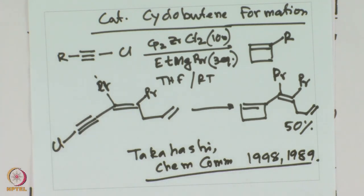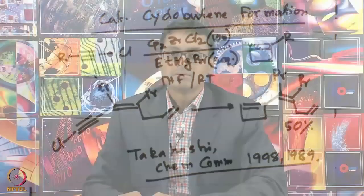This is a catalytic cyclobutene formation reaction, beautifully done starting from alkynyl ethyl halide by reacting with dicyclopentadienyl zirconium unsaturated compound. The dicyclopentadienyl zirconium unsaturated compound is synthesized by starting with the zirconium dichloride species and reacting with a Grignard reagent such as ethyl magnesium bromide.